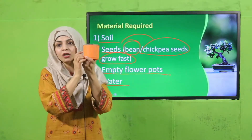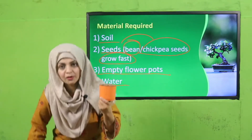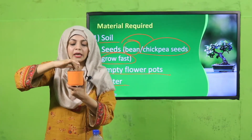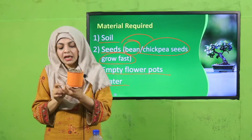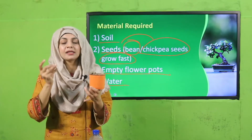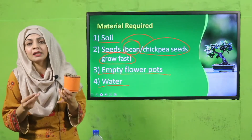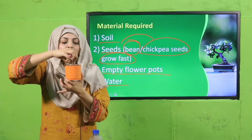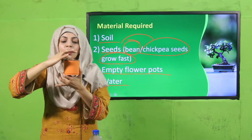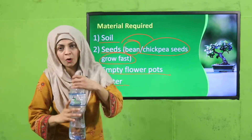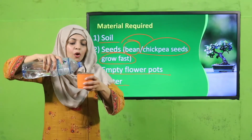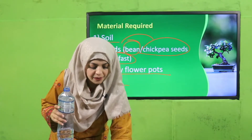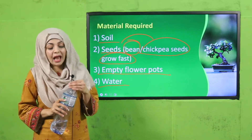Here I am going to sow a bean seed. I have a flower pot with some soil in it and a water bottle to water my plant. First, I will set aside some soil. I had soaked this seed overnight in water — just like when we soak dal at home — so that the seed coat becomes soft. Now I am going to put it in the soil, cover it with soil, then water it. Finally, I need to place it in sunlight so it gets warmth, and I will note when it sprouts.